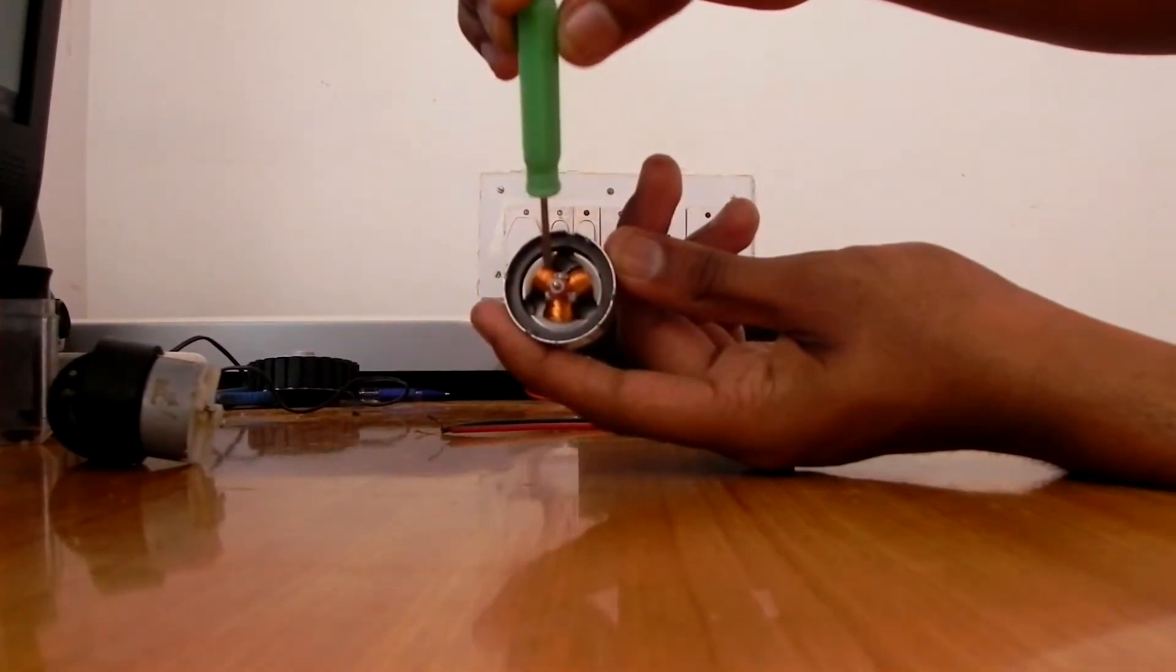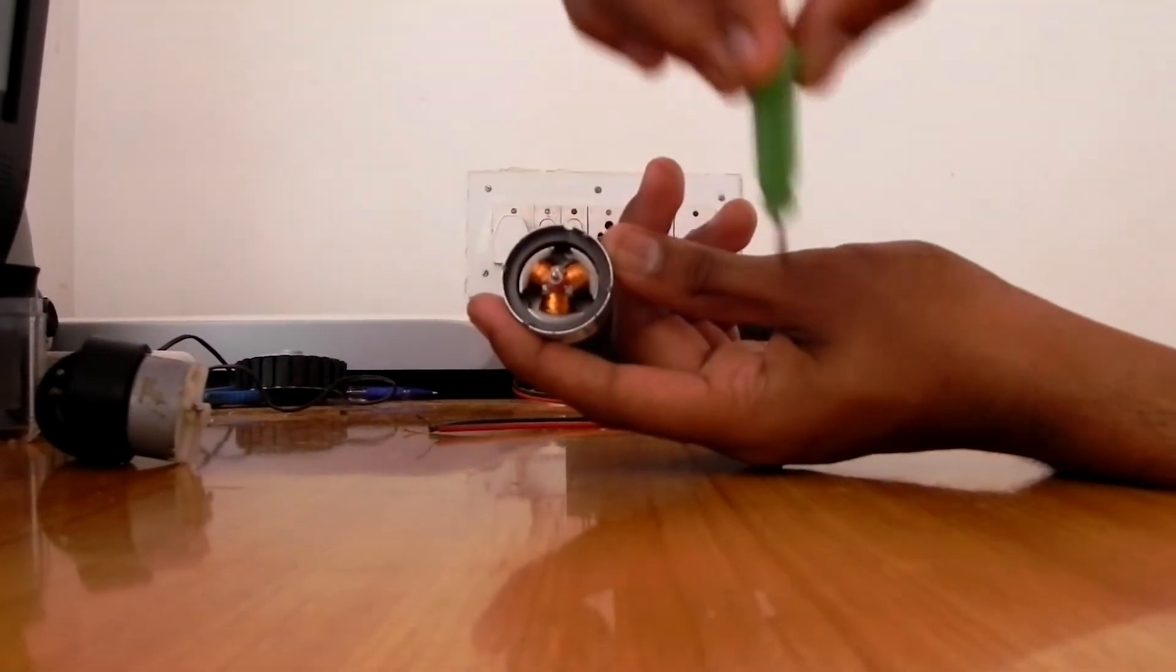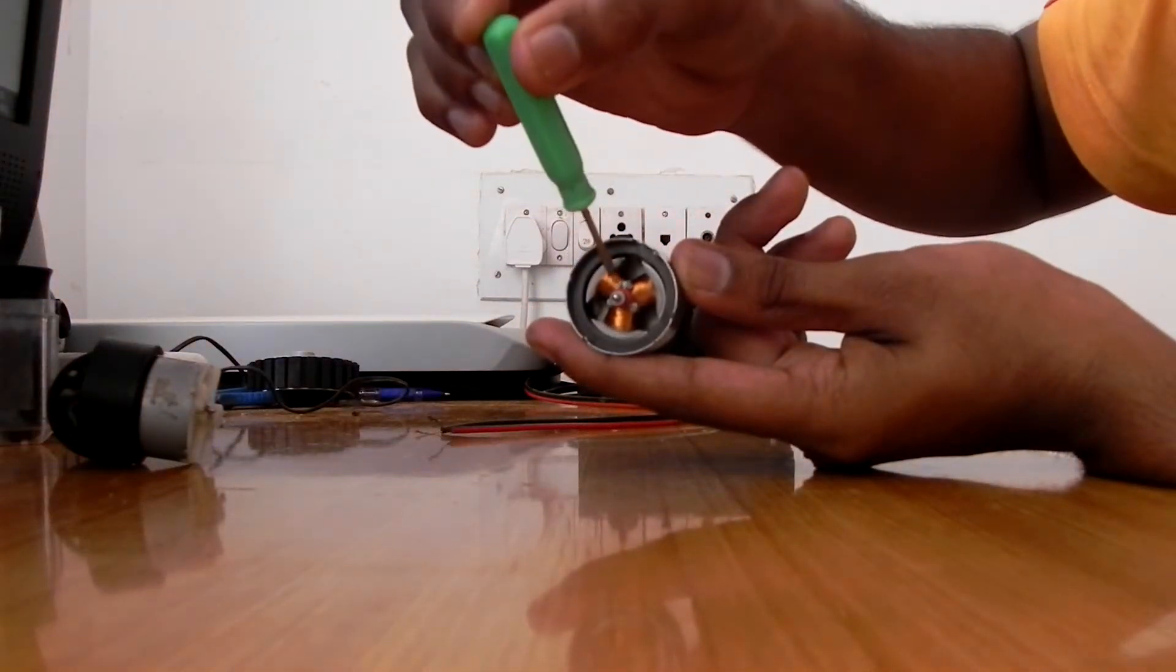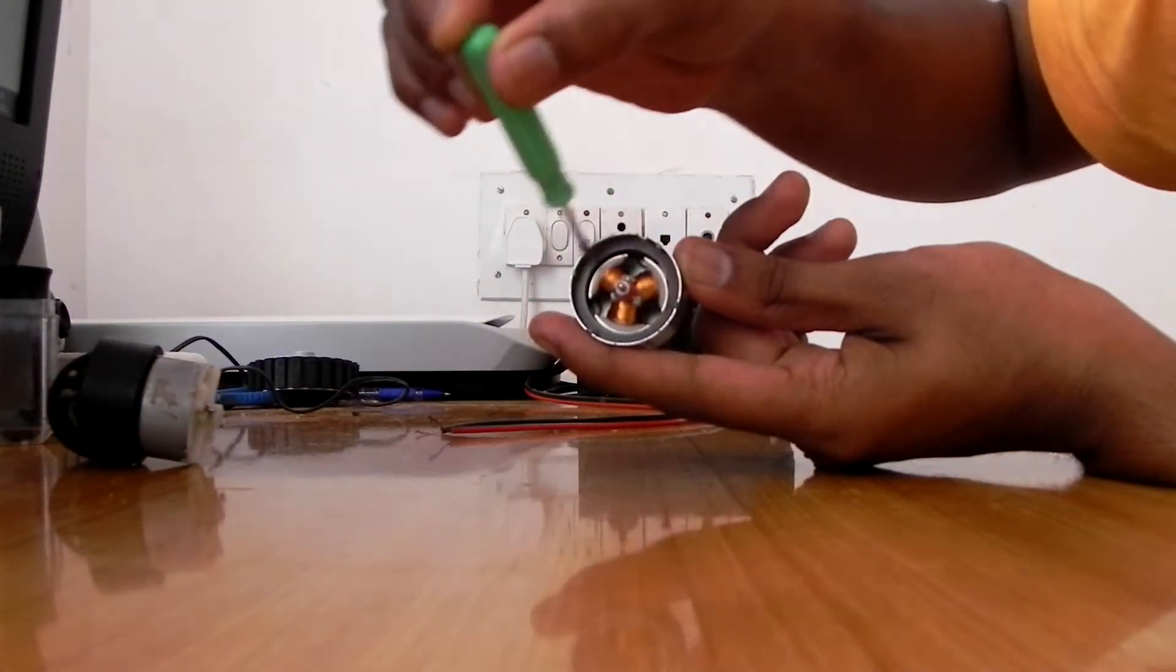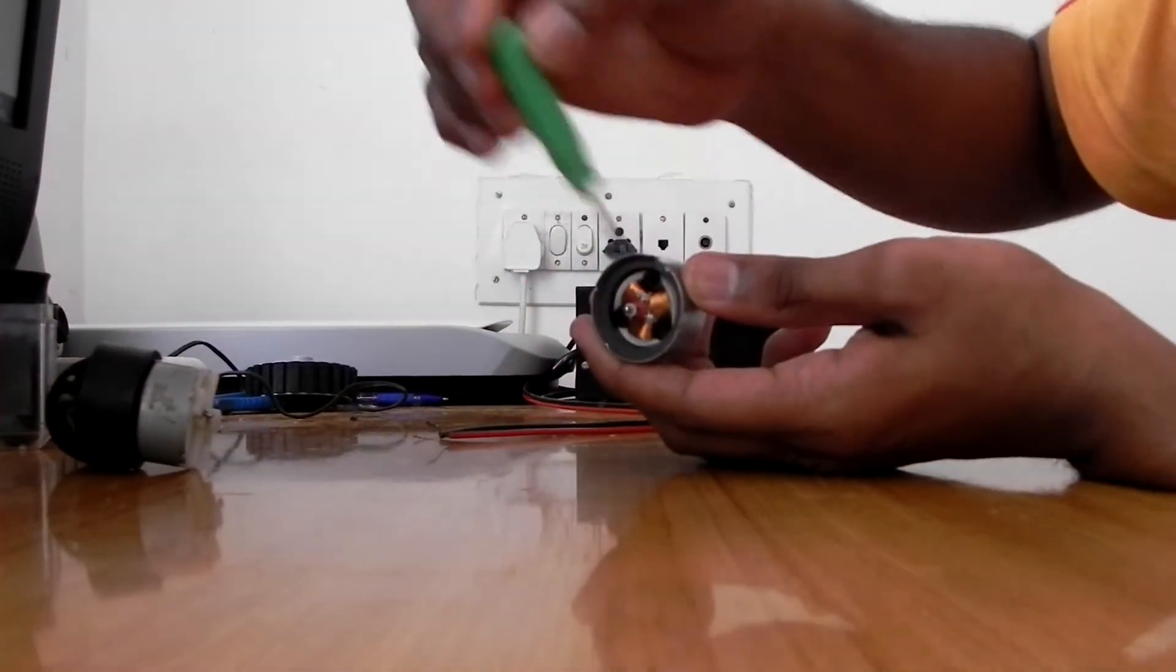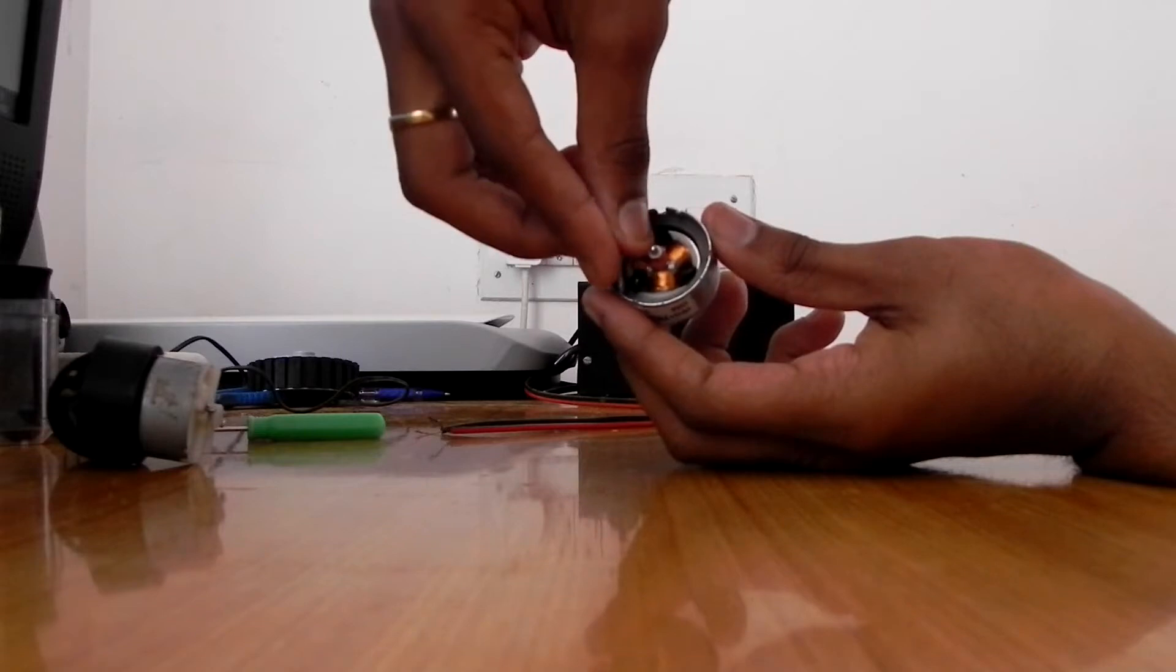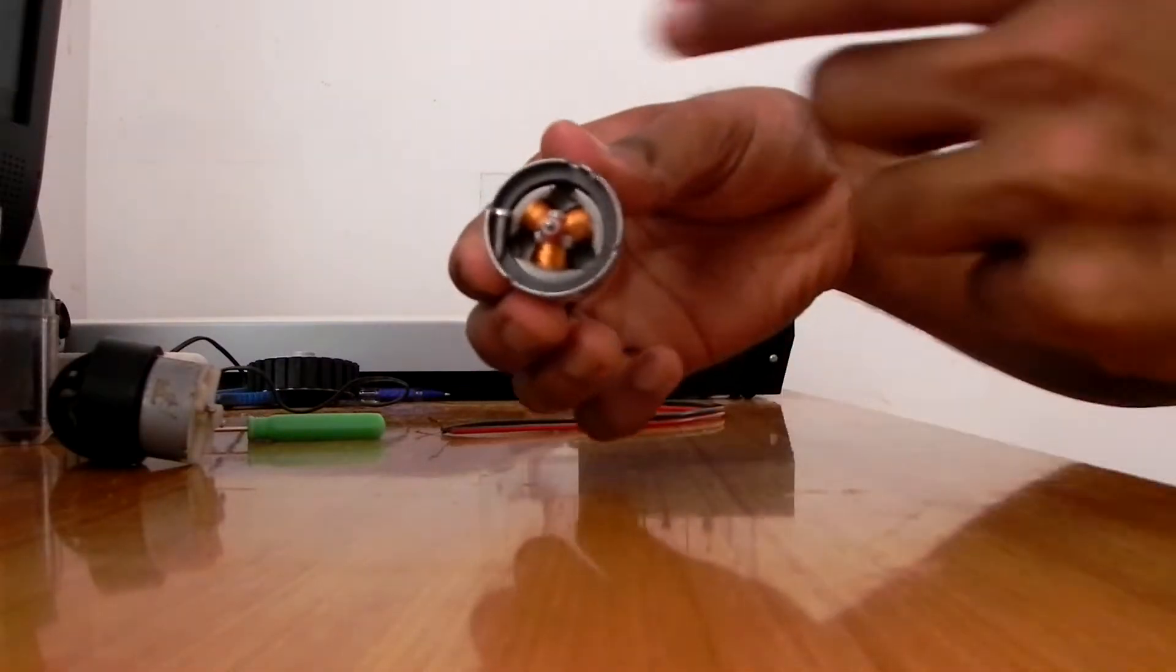And now you can see the main thing, the whole core of the motor: the copper windings, the permanent magnet here, and the armature. I can show you the permanent magnet which is inside.